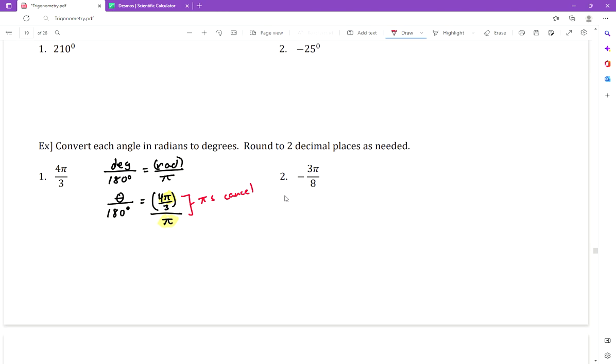That would make that just 4/3 on the right, so it always looks nastier than it really is. We have θ over 180 equals just 4/3. That's how it always works when you have π like that in the numerator. Now all we want is θ by itself.